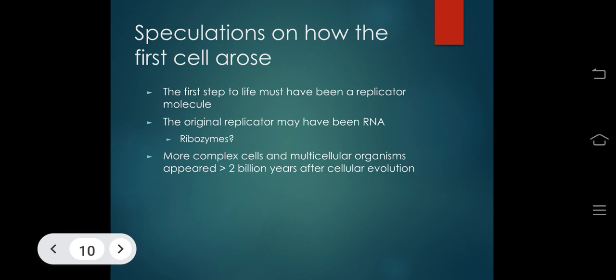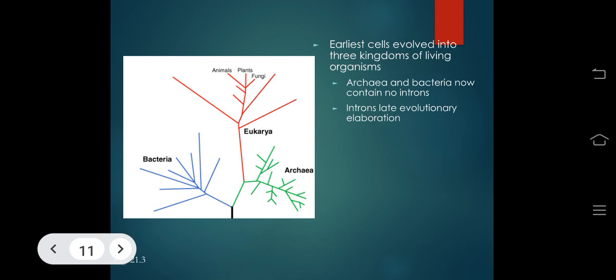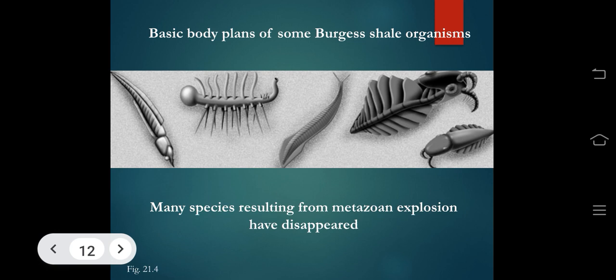Speculations on how the first cell arose: the first step to life must have been a replicator molecule — the original replicator may have been RNA or ribozymes. More complex cells and multicellular organisms appeared more than two billion years after cellular evolution. The earliest cells evolved into three kingdoms — Archaea, Bacteria, and Eukarya — with bacteria containing no introns (introns being a late evolutionary elaboration).